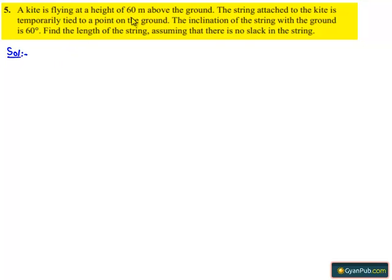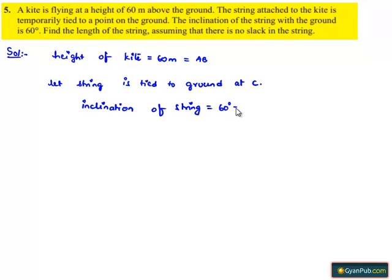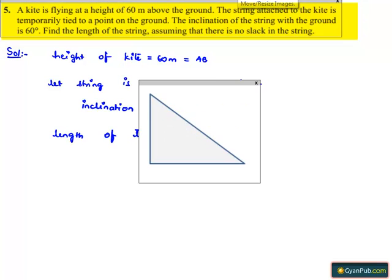It is given that the kite is flying at a height of 60 meters above the ground. Let us assume that the height of the kite from the ground is 60 meters, which is equal to AB. Let the string be tied to the ground at point C. At C, the inclination of the string is given as 60 degrees — let it be angle theta. We need to find the length of the string. Let us represent the above data in the form of a figure, just as shown.